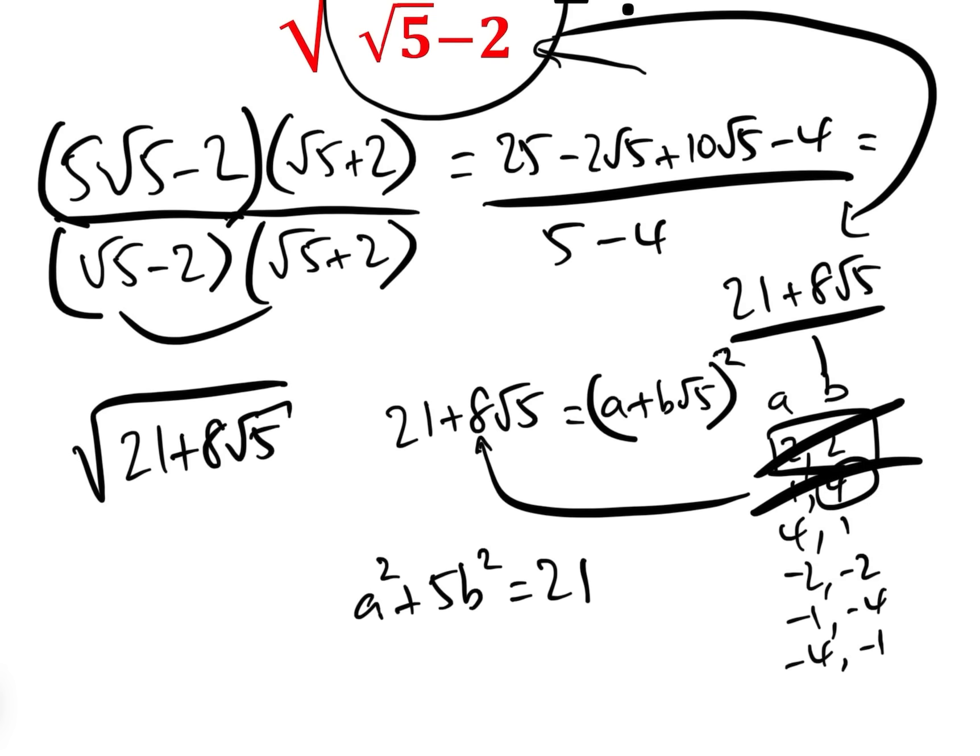a equals 4 and b equals 1. Okay, so that's a² is 16 and 5 times b² is 1, that gives us 21. And so therefore we know that we can write 21 add 8√5 as (4 add √5)².